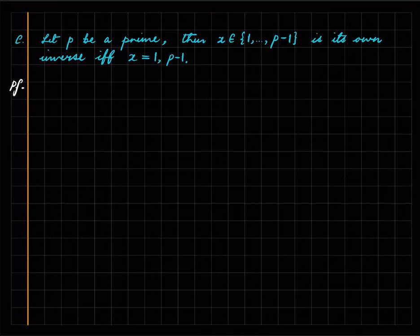So a very simple corollary of the previous thing is that if p is a prime, then if you choose an x in the range 1 to p-1 which is its own inverse, then x is either equal to 1 or x is equal to p-1. This is immediate from the previous thing because if x is its own inverse, then we have x² ≡ 1 (mod p), because x times x ≡ 1 (mod p), that's what it means to be its own inverse.